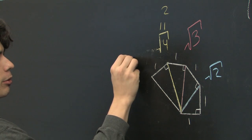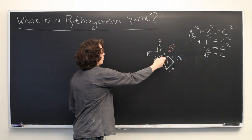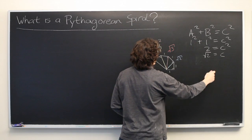And then this one is going to be square root of five. Just keep going this way and it will slowly expand outwards like that.